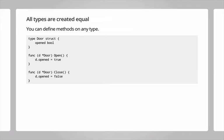The star means that's a pointer. In Go, if you want to modify the object that the method is being called on, you should have a pointer receiver; otherwise you'll be modifying a local copy of it.